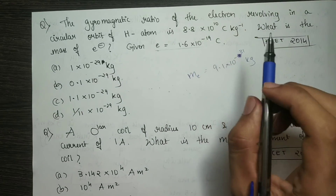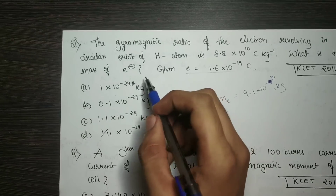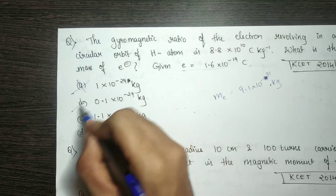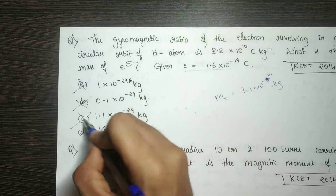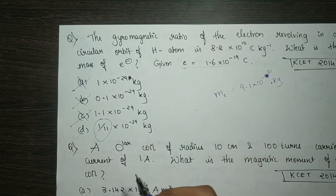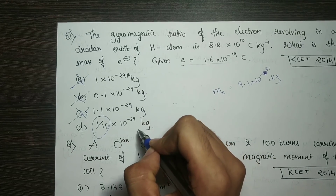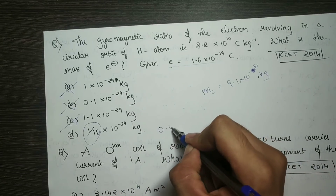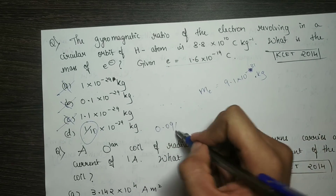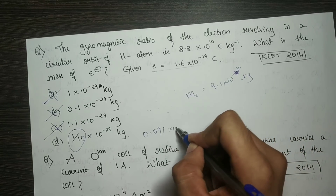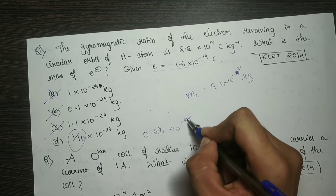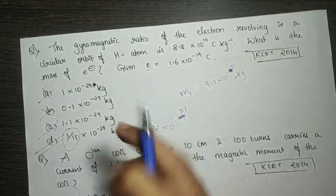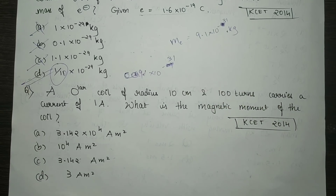The mass of the electron is 9.1 × 10⁻³¹ kg. After calculation, the answer comes out to 9.1 × 10⁻²⁹. Shifting the decimal point: 31 → 9.1, answer is option B.